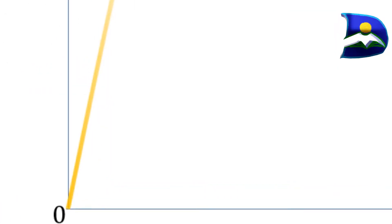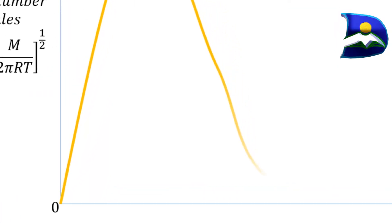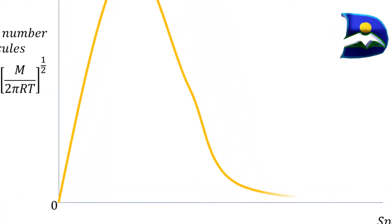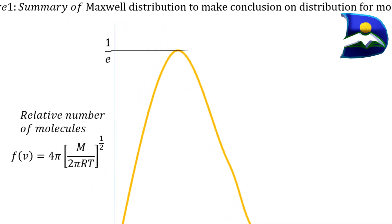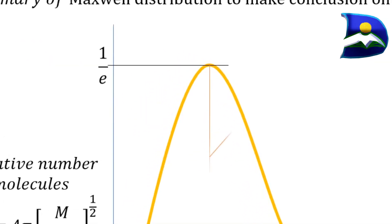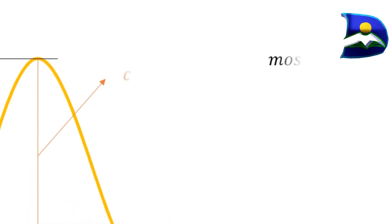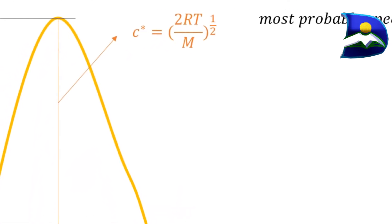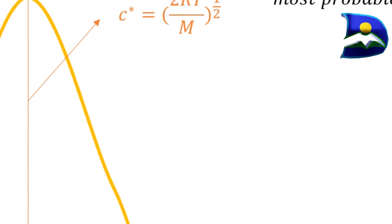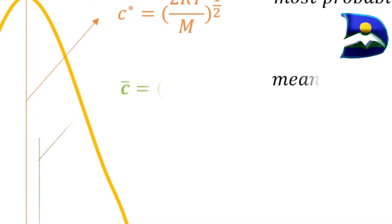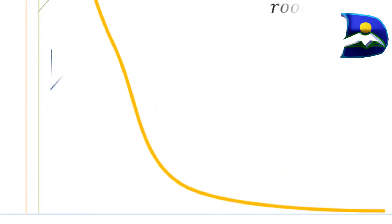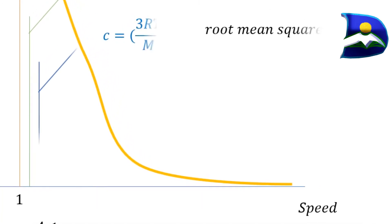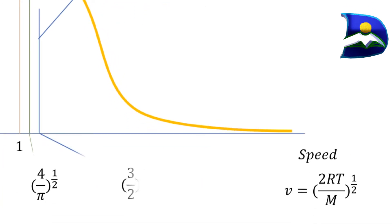This curve has a particular bell-curve form, and as a result we can find the most probable speed at the top — the maximum of this particular curve. Going from left to right at higher speed is where we have the mean speed, and the highest speed is the root mean squared speed.